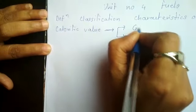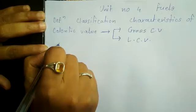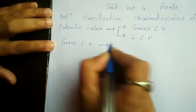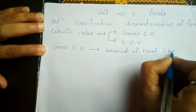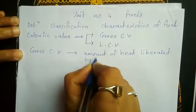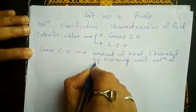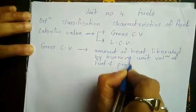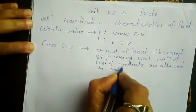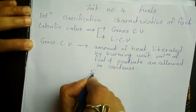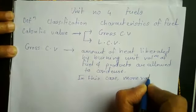Gross calorific value is nothing but amount of heat liberated by burning unit volume of fuel and products are allowed to condense. In this case we get more value of heat as expected because after condensation, let us consider a silica crucible.